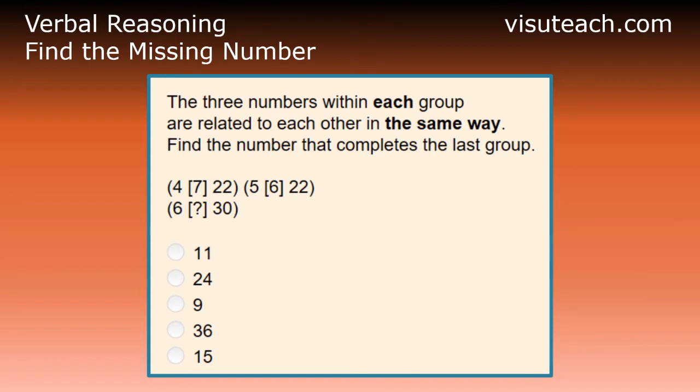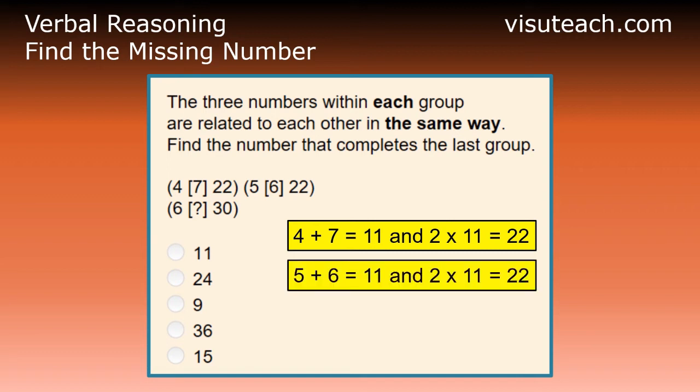For the first group of numbers, we have 4 plus 7 is 11, and 2 times 11 is 22. For the second group of numbers, we have 5 plus 6 is 11, and 2 times 11 is 22.